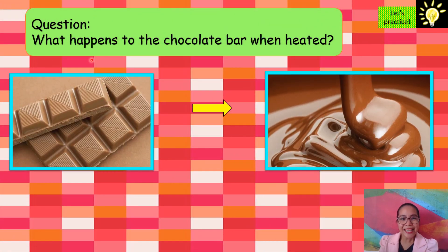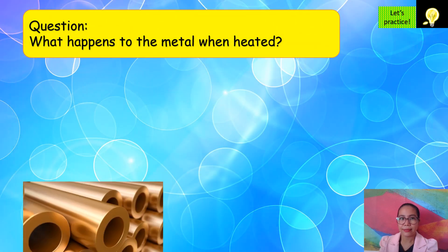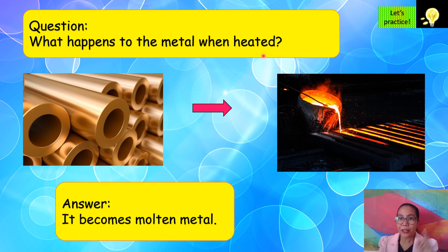What happens to the chocolate bar when heated? It melts. Last question: what happens to the metal when heated? It becomes molten metal.